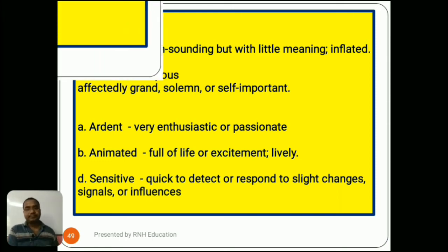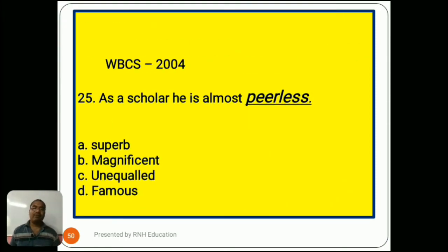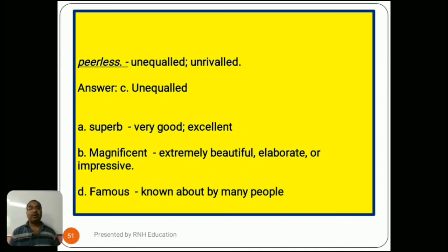Question number 25, from 2004: 'As a scholar, he is almost peerless.' Options are A) superb, B) magnificent, C) unequaled, D) famous. Peerless means unequaled or unrivaled. So the right answer is C) unequaled. Option A, superb, means very good or excellent. Option B, magnificent, means extremely beautiful, elaborate, or impressive. Option D, famous, means known about by many people.